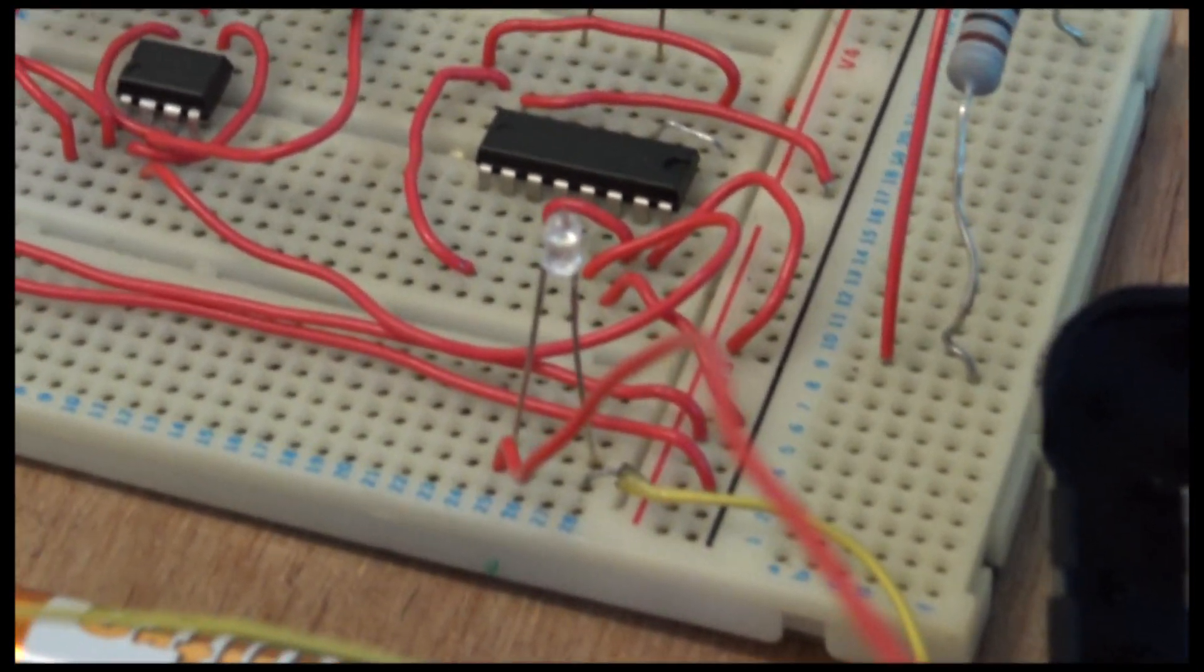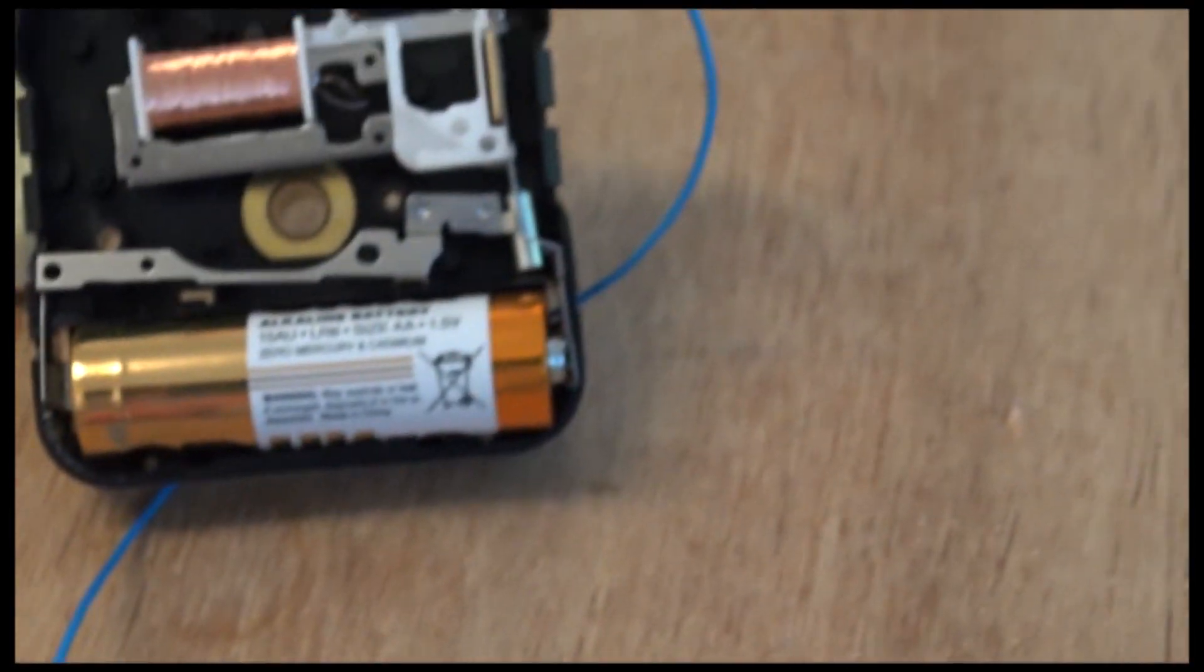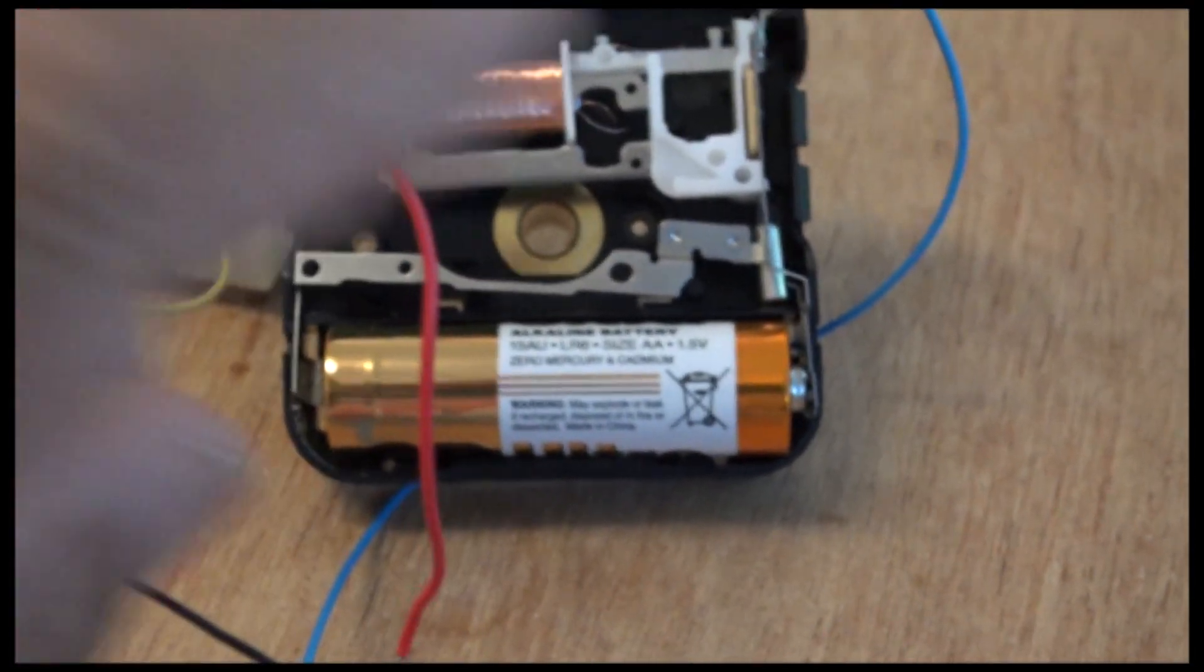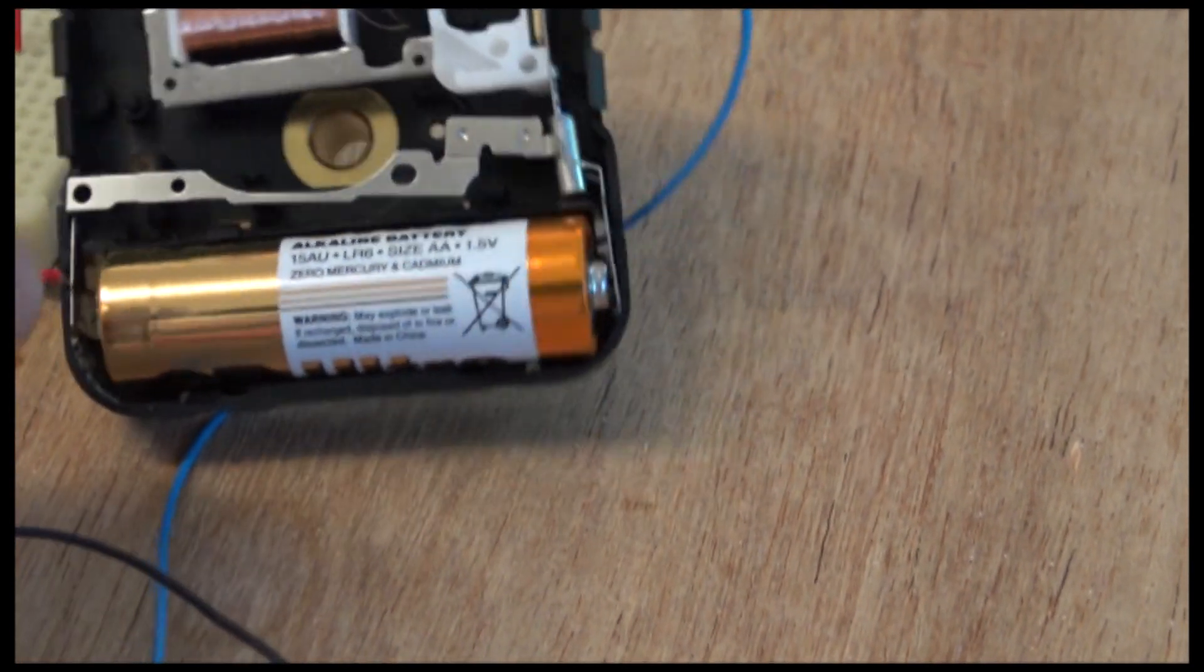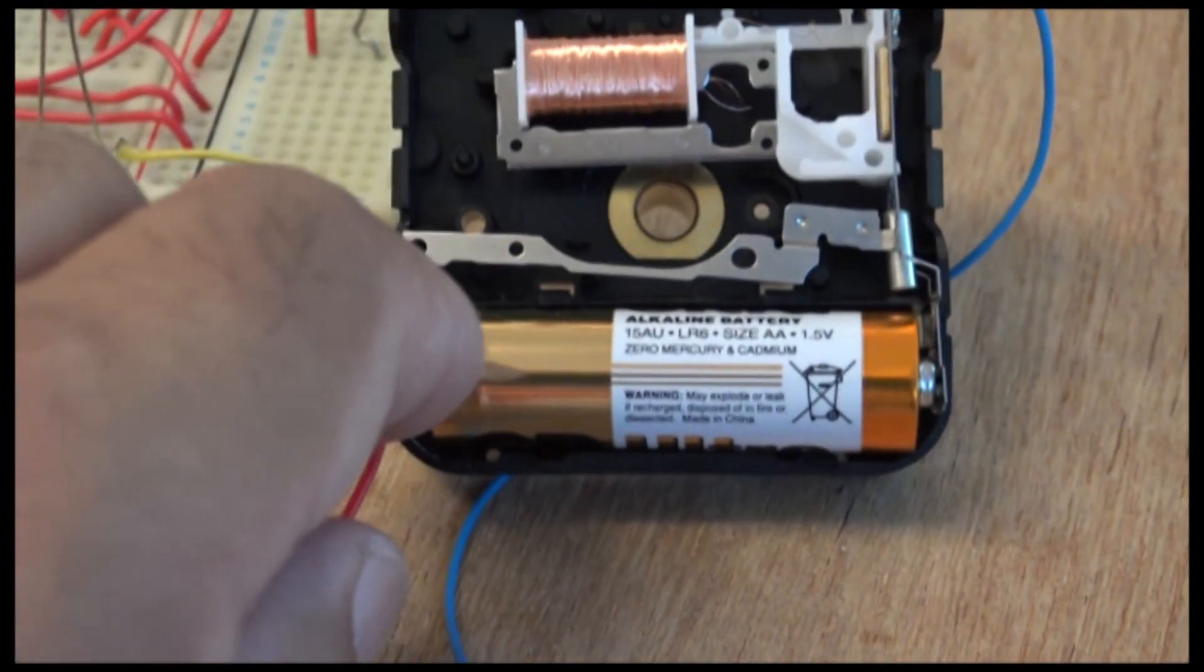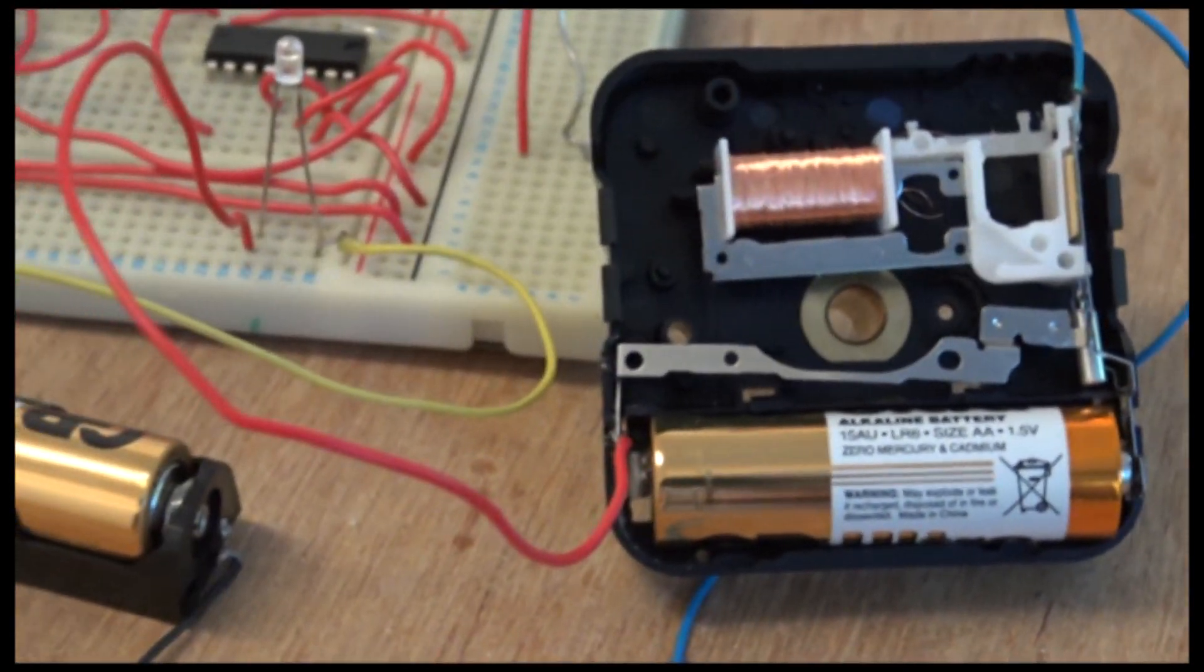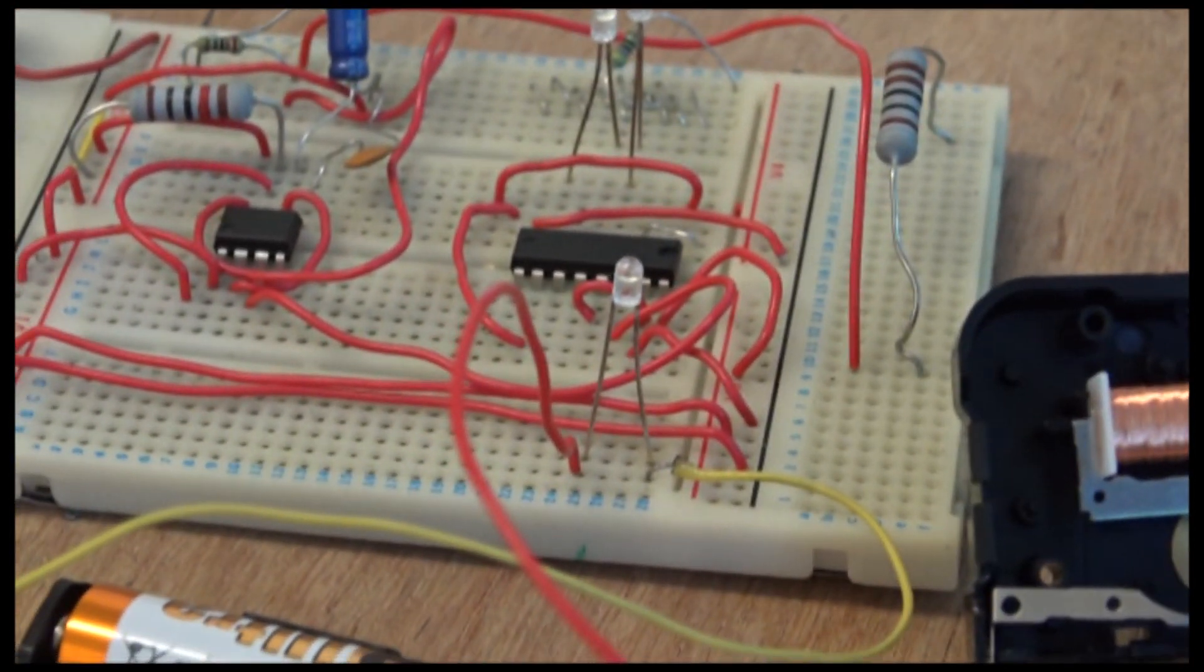Now all I have to do is connect the LED negative, which is the red one—I know what you're going to say—to the negative side of this battery here, which I've done. And as you can see, the LED is flashing.